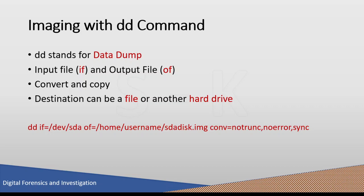The DD command stands for data dump and has input file and output file parameters. It is used to convert and copy a file from input to output. It reads the input file parameters, converts to a specified format, and copies the data into the output file parameter. The syntax uses IF for input file — for example, /dev/sda representing a hard drive — and OF for the output file, which could be a file in the user's home directory.